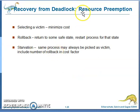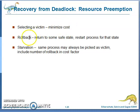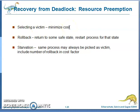The second method of deadlock recovery is resource preemption. Here, you select a victim resource to minimize cost. Once you preempt that resource, some processes may be affected. You roll back all affected processes so they return to some safe state, and then restart the process from that safe state.